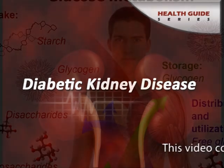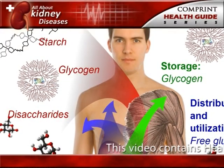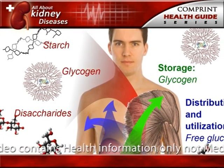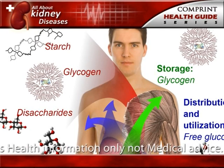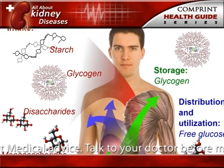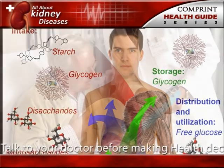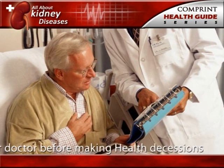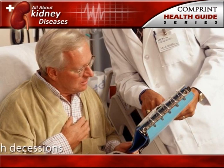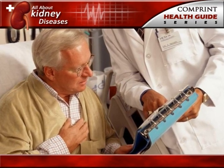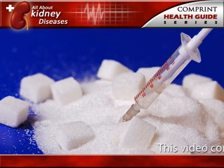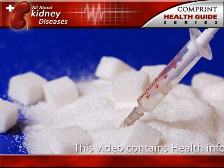Diabetic kidney disease. Diabetes is a disease that keeps the body from using glucose, a form of sugar, as it should. If glucose stays in the blood instead of breaking down, it can act like a poison. Damage to the nephrons from unused glucose in the blood is called diabetic kidney disease. Keeping blood glucose levels down can delay or prevent diabetic kidney disease.